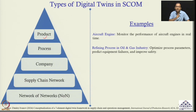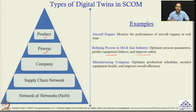Then we have the process level digital twin. For example, the digital twin of a refining process in the oil and gas industry helps decision makers to optimize process parameters, predict equipment failure and improve safety. Then we have the company level digital twin, also called enterprise level digital twin. For example, the digital twin of a manufacturing company helps managers to optimize production schedules, monitor equipment health and improve the overall efficiency of the organization.